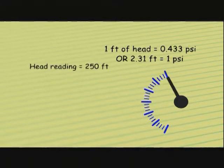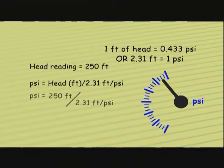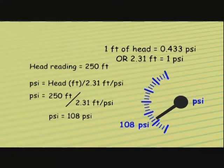If we have a head reading of 250 feet, what is the PSI on the pressure gauge? It's basically the same calculation. If we want to know PSI, this is going to equal head in feet divided by 2.31 feet per PSI, which equals 108 PSI.